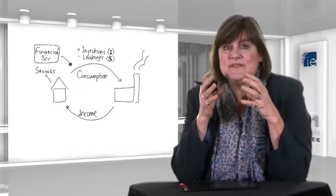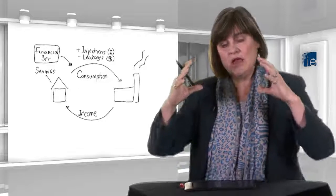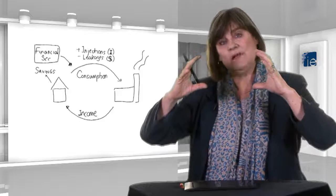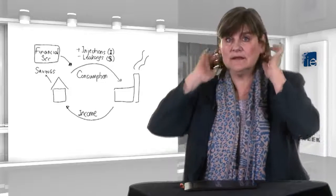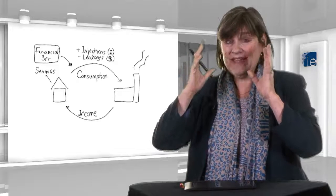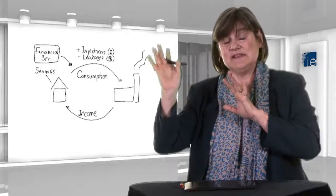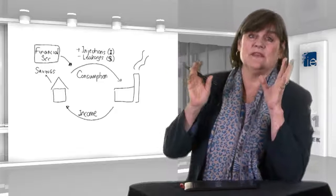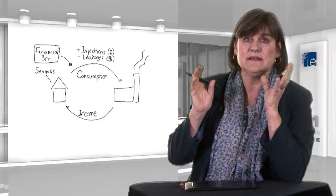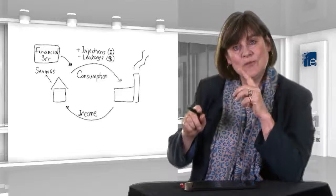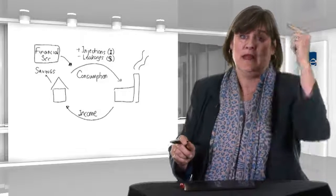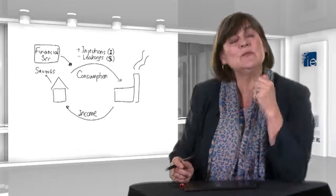And what you realize, if you think about this, is the economy will be stable at the place where injections equal leakages. Now, if leakages, savings in this case, are bigger than injections, which is investment, you can see that the economy is going to decline. We took out 10 and only 5 come back in. The economy will decline.